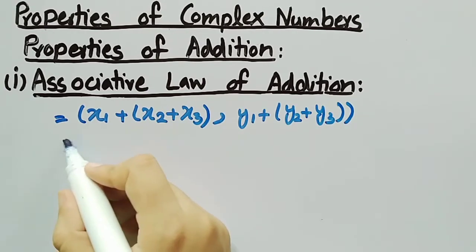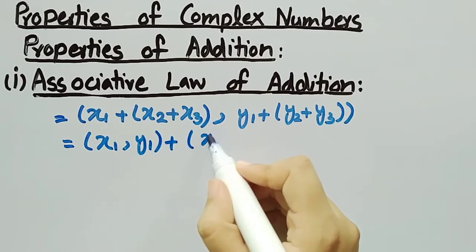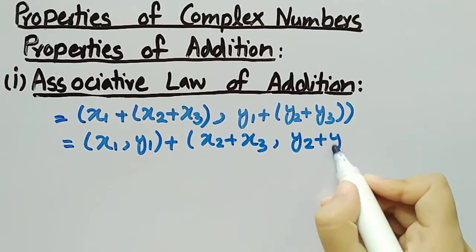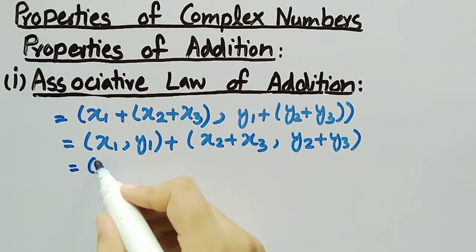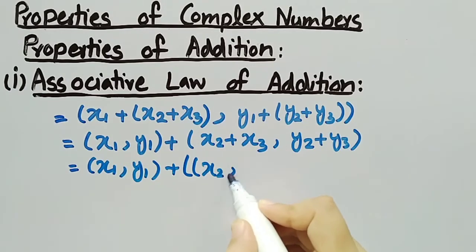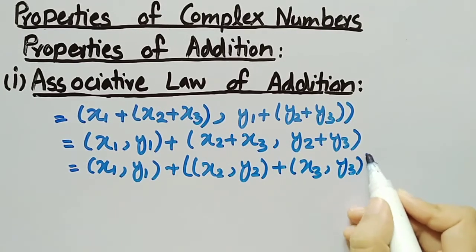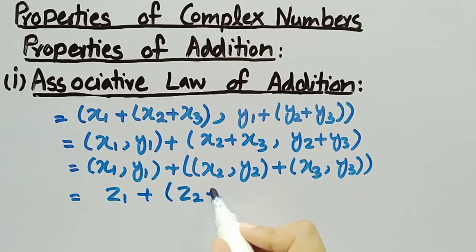It can also be written as (X1, Y1) plus (X2 plus X3, Y2 plus Y3), which can be further written as (X1, Y1) plus (X2, Y2) plus (X3, Y3), which equals Z1 plus Z2 plus Z3. So, the associative law of addition holds for complex numbers.